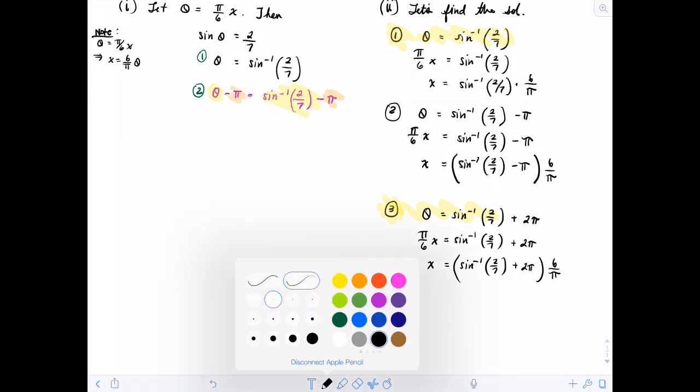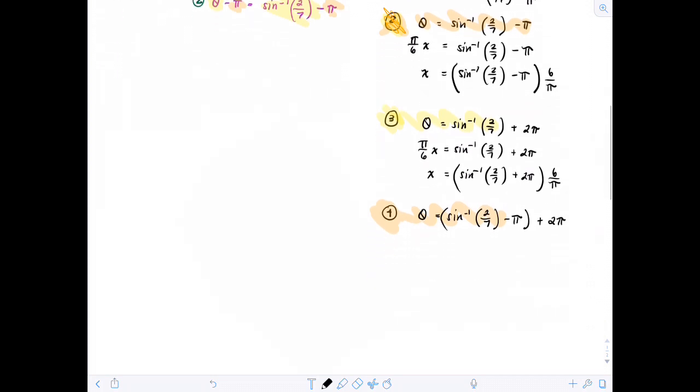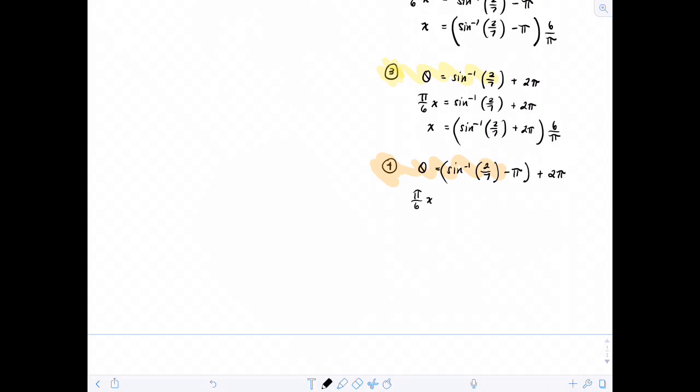So the fourth angle. Recall that that relates to 2. And that is 1 revolution over. So remember that theta would be equal to inverse sine of 2 sevenths minus pi plus 2 pi. But remember that theta is equal to pi over 6x, which is equal to the inverse sine of 2 sevenths minus pi plus 2 pi. And then x, this implies x is equal to the inverse sine of 2 sevenths minus pi plus 2 pi all times 6 over pi.